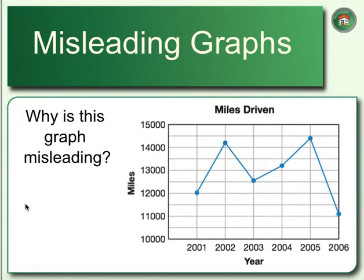Next one — why is this graph misleading? First off, we have a broken axis going from 10,000 to 15,000, making this graph look like it's having some huge jumps. To fix this, we should probably go from 0 to 15,000. This graph is pretty misleading because it makes it look like going from 12,000 to 14,250 is a huge jump, when in reality that's not that much of a difference. They're making these jumps look a whole lot bigger than they really are.